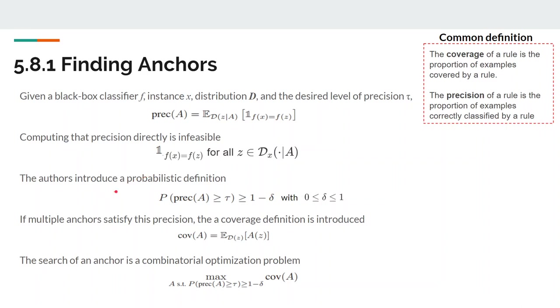For this reason, the authors introduced a probabilistic definition, obtaining the probability that the precision is greater than tau is greater than one minus a new hyperparameter delta.